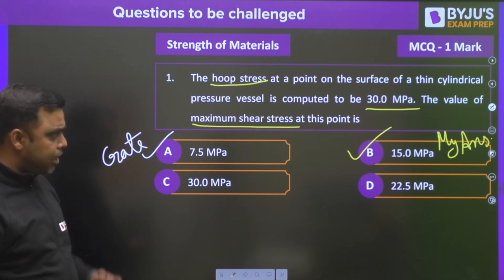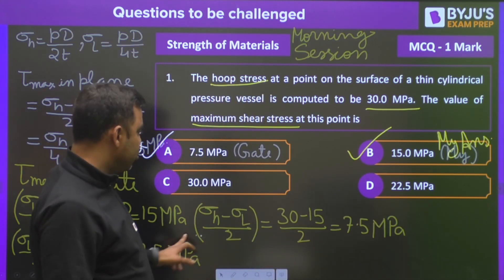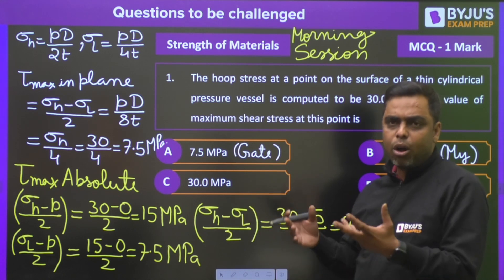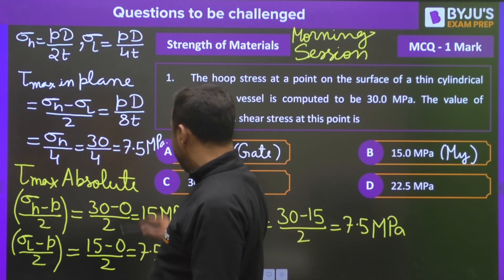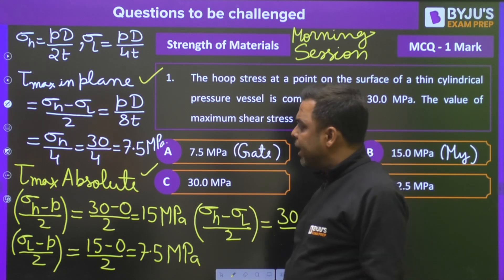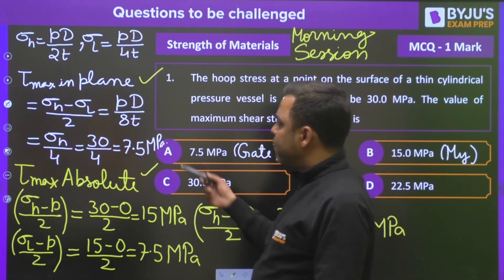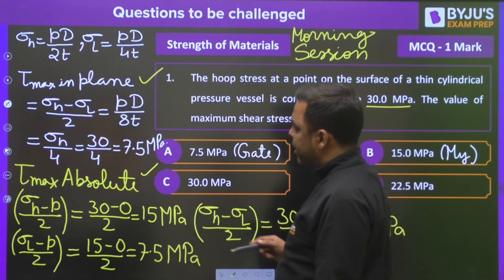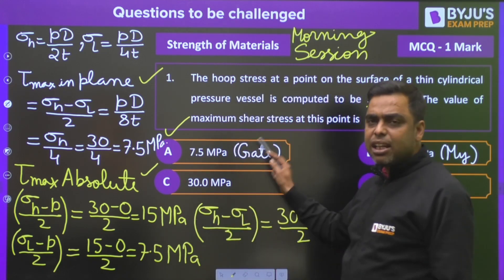GATE has given the answer as option A, but according to Byjus Exam Prep, the answer is option B. In the case of a thin cylinder, there are two types of maximum shear stress: tau max in-plane and tau max absolute. For tau max in-plane, the formula is (σ_hoop − σ_L) / 2 = pd/8t. Since pd/2t = σ_hoop = 30 MPa, tau max in-plane = σ_hoop / 4 = 7.5 MPa. That is the answer given by GATE.